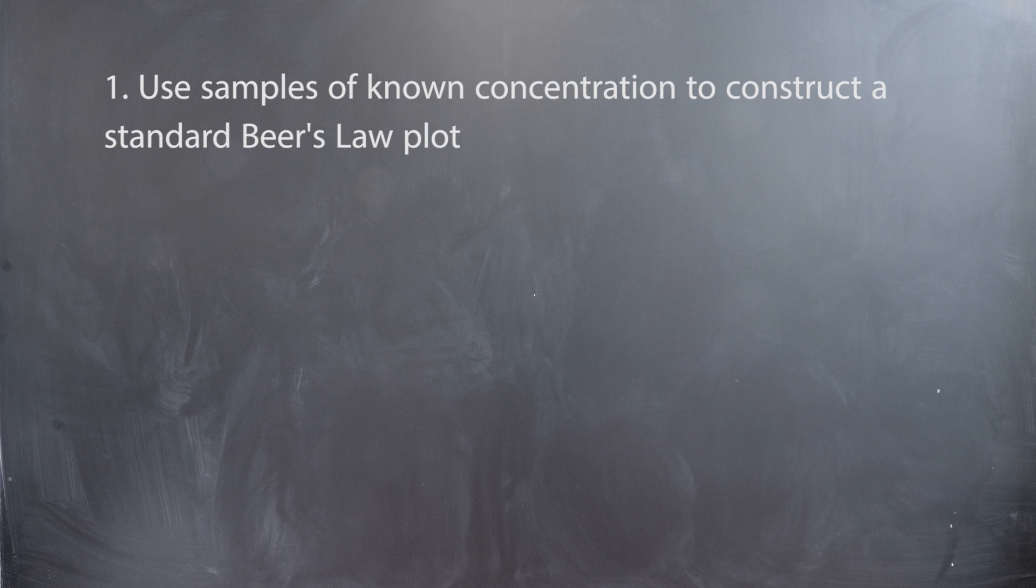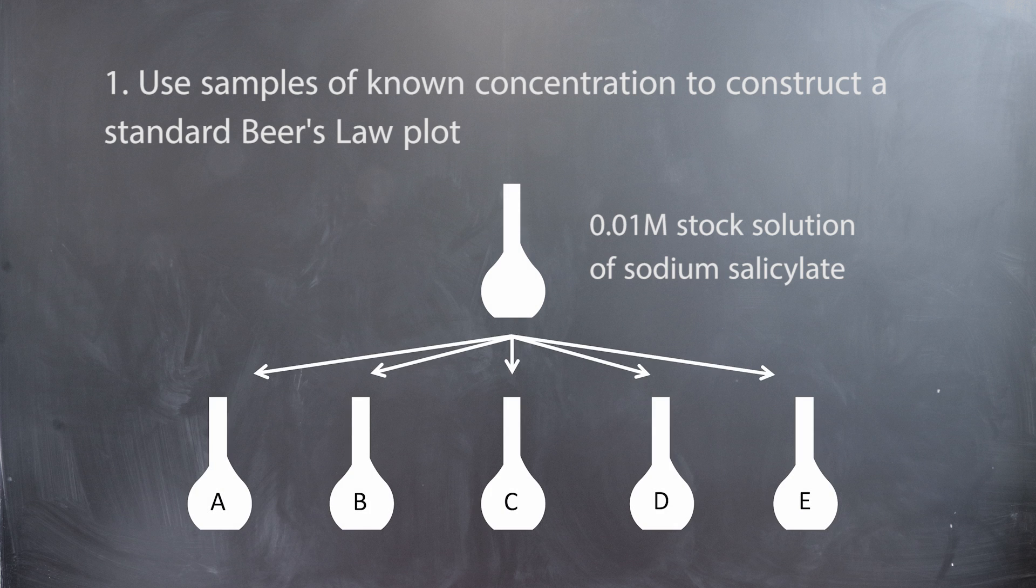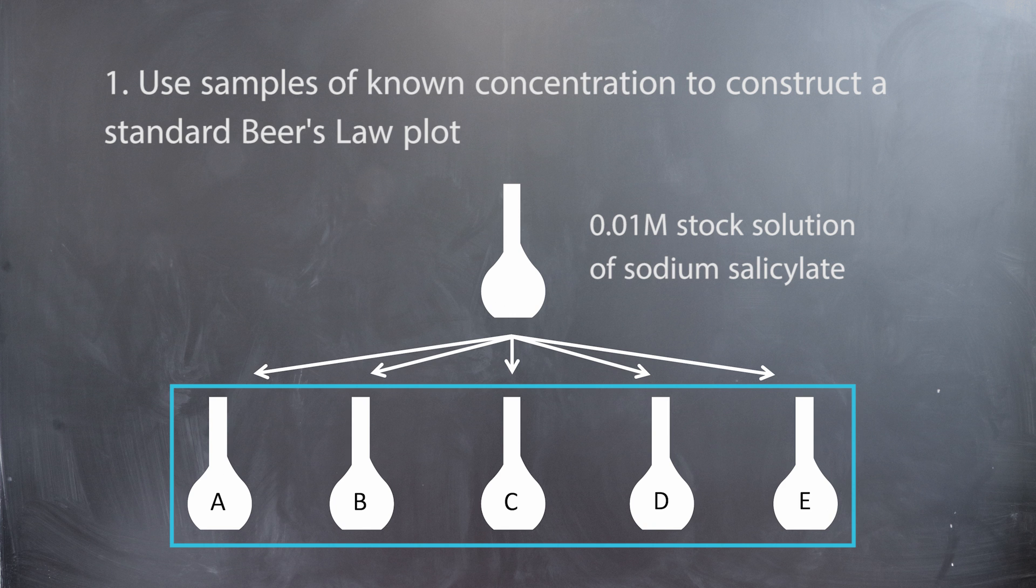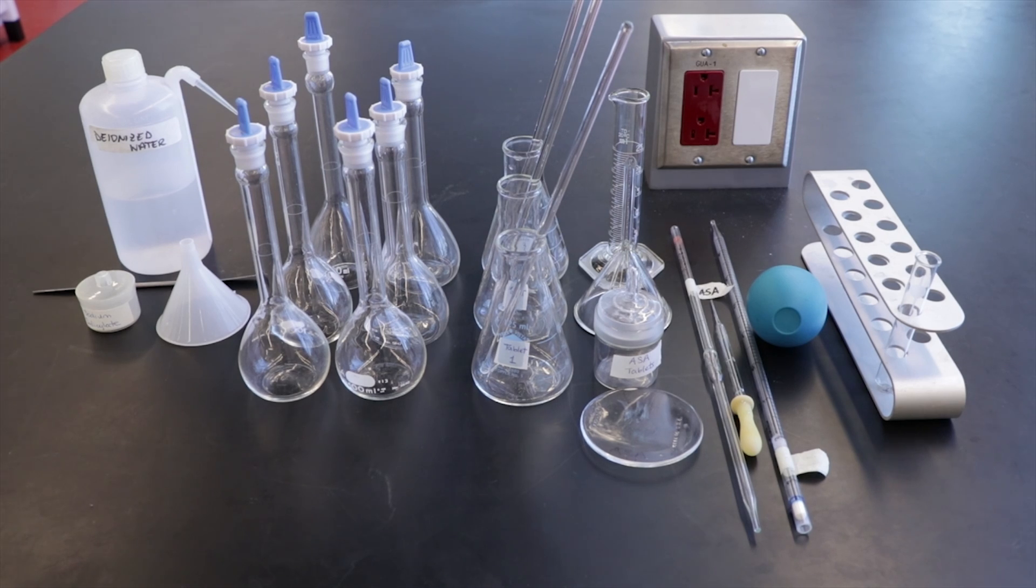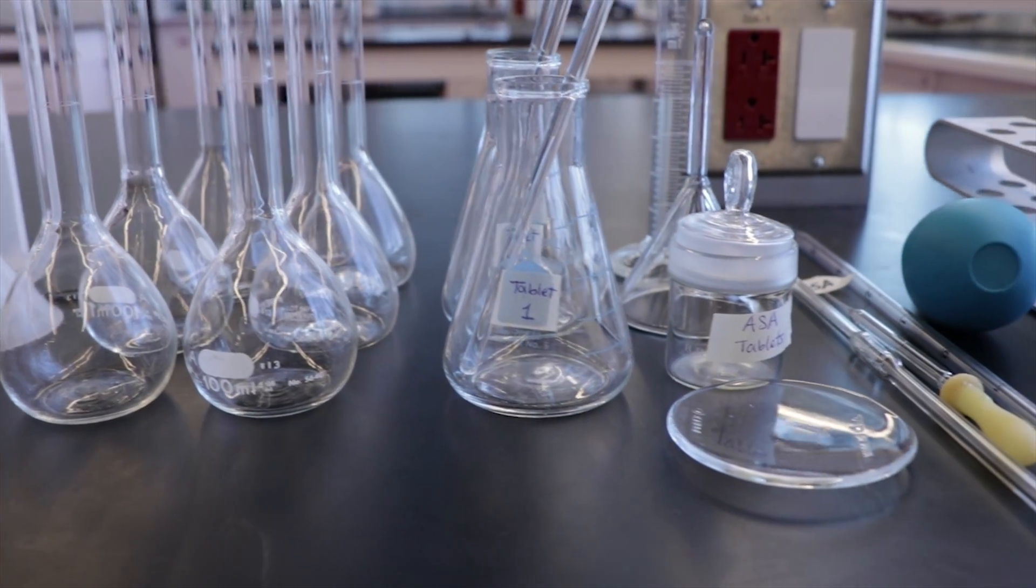In the first part of this experiment you will make a 0.01 molar stock solution of sodium salicylate and use that stock to make five standard solutions, A through E, which will be analyzed using the spec 20. This is the apparatus we will be using for this lab. Remember to label all the glassware to ensure that you are organized.